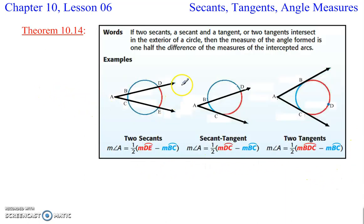If they intersect outside of the circle, whether it's two secants, a secant and a tangent, or two tangents, if they intersect outside, then we have half the difference. So then we subtract these two and take half of that. Half the difference.